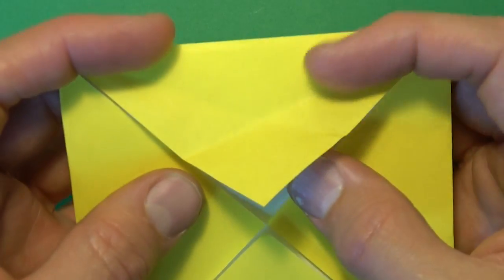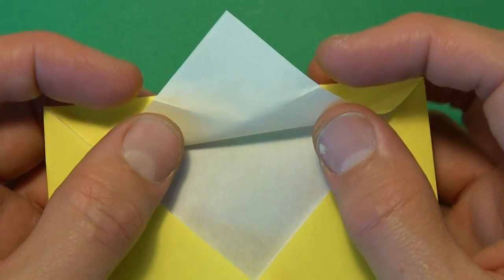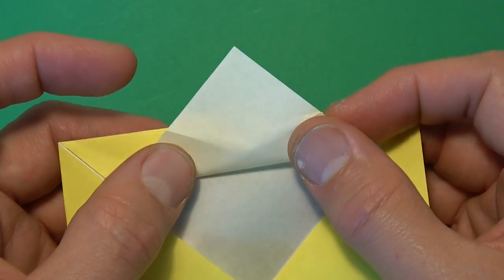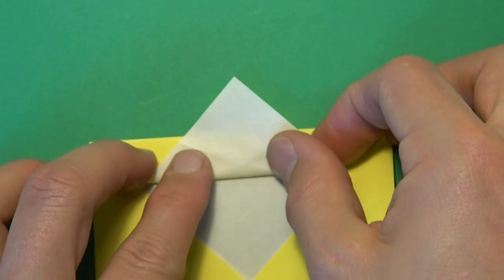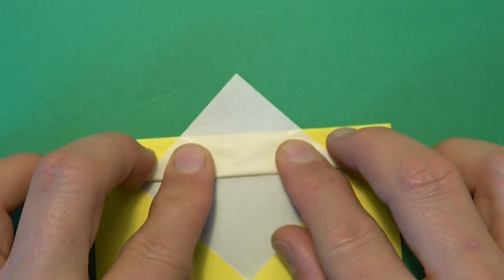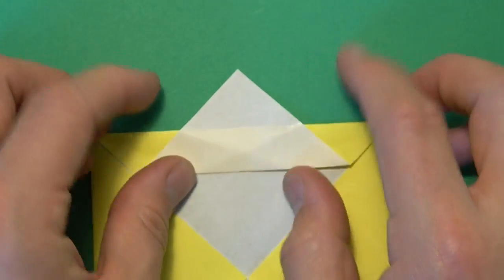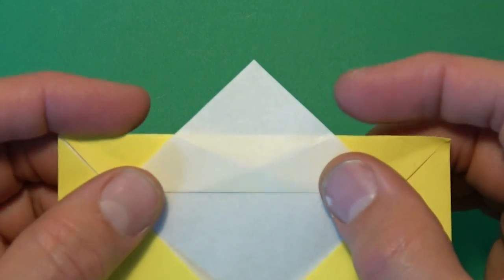And now let's fold this flap up so that these two crease marks touch this edge. So it's like that.